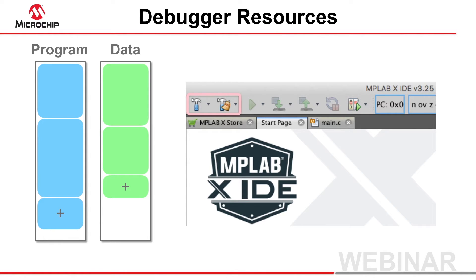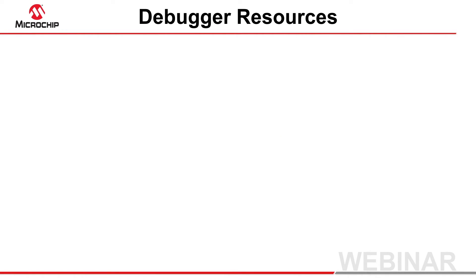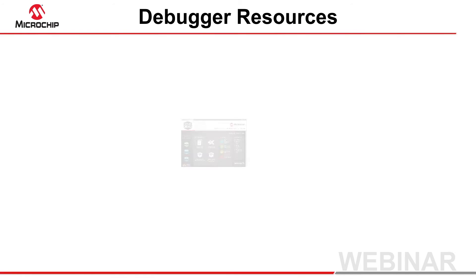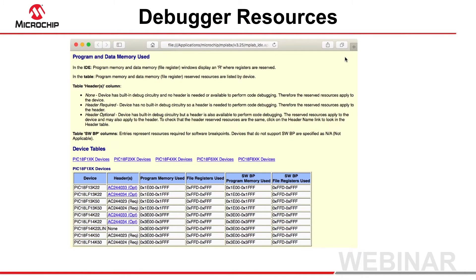Production builds will have access to all the device memory. To get an idea of the size and location of additional memory required for debugging, go to the Start page in the IDE. Click Learn and Discover, then User's Guide and Release Notes, which will open a web page in the browser you have configured in the IDE preferences. The Reserved Resources links will show you the requirements for all the device families.